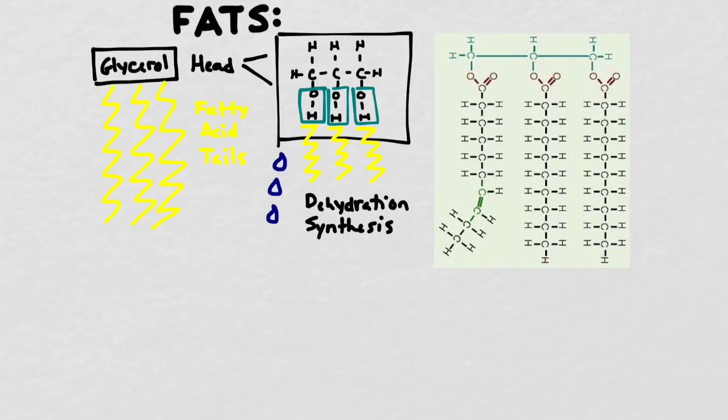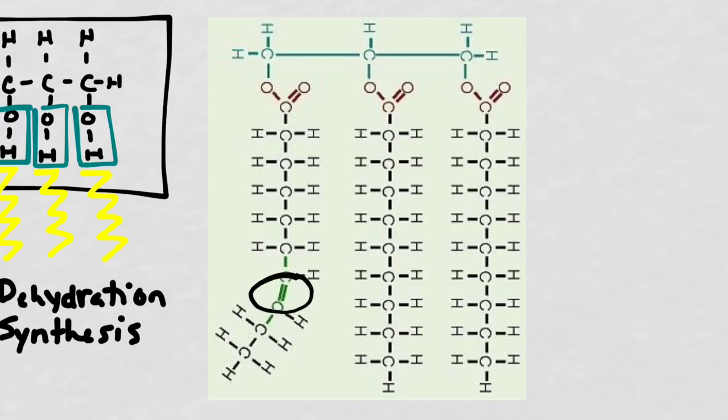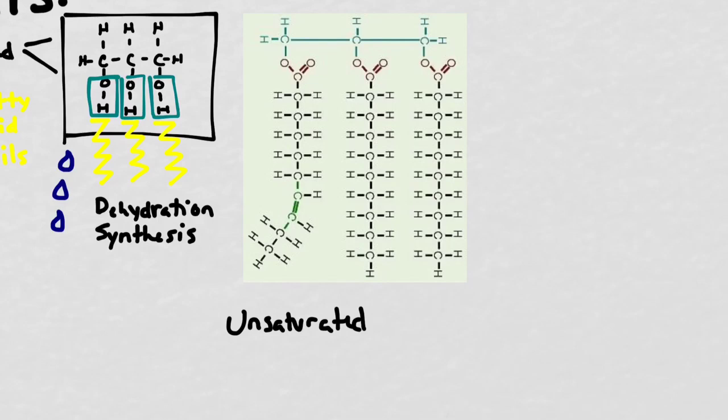Notice if you look at the three fatty acid tails that the one on the left actually has a kink in the center. This makes the leftmost fatty acid tail different from the middle and the right-hand ones. The left fatty acid tail is what we call an unsaturated fat. It's called unsaturated because not every carbon is bound to the maximum number of hydrogens, and because it has a double bond in the center, it causes a kink in the middle of the fatty acid chain.